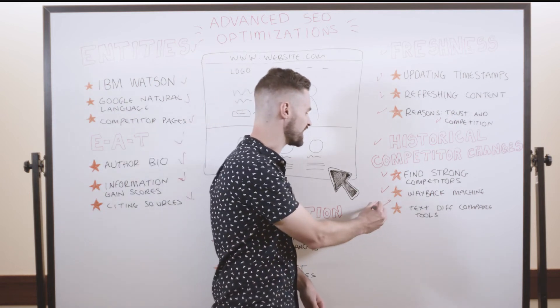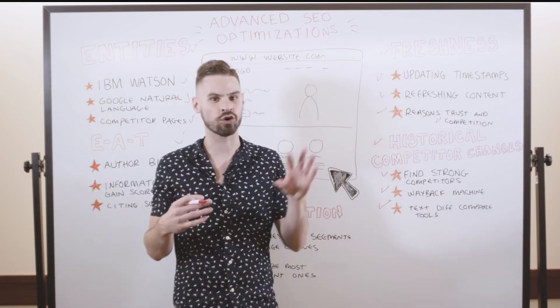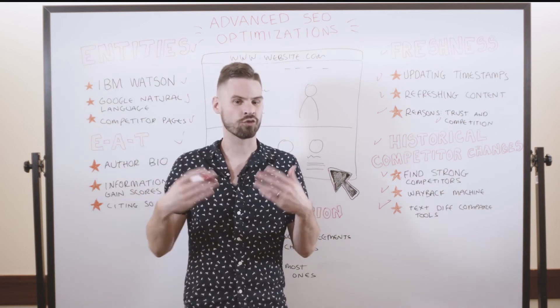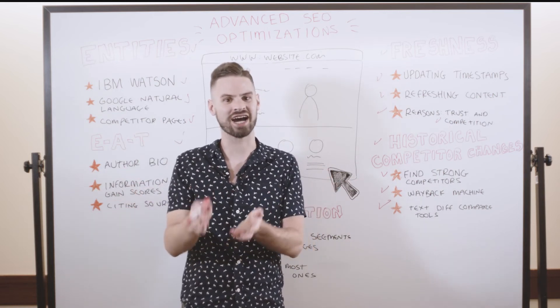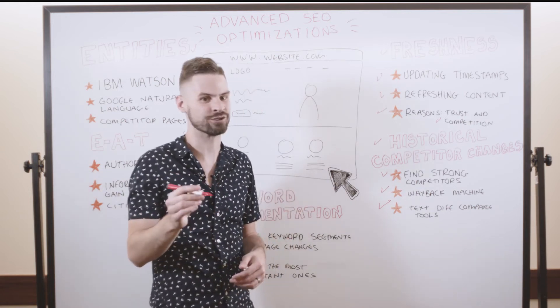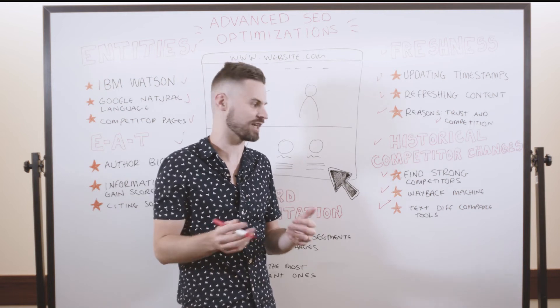And that can help you better isolate what the most prominent on-page changes competitors have made have been. Another great strategy to use is a text-diff compare tool. You can actually take an old version of text and then compare that against the current version of text, run that through a tool, and the tool will actually highlight all of the changes competitors are making that makes it very easy for you to find what on-page strategies your competitors are utilizing.